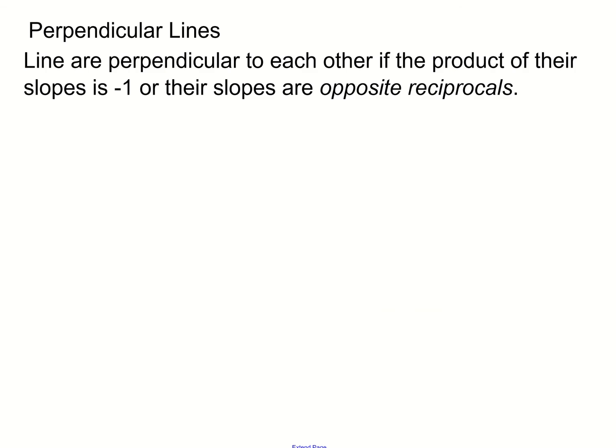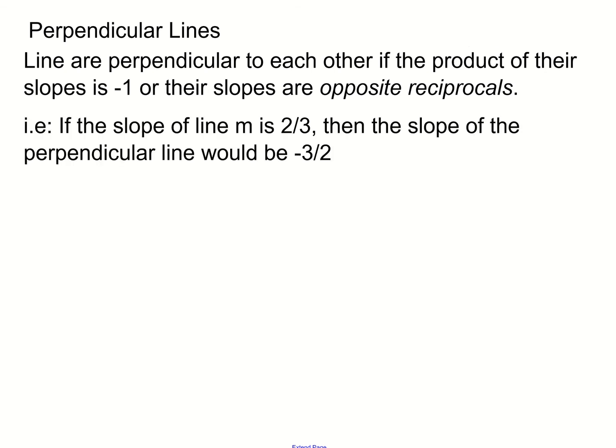Another way to look at perpendicular slopes: their slopes are opposite reciprocals. Opposite means one is positive and one is negative — opposite signs. Reciprocal means you flip the fraction. So you flip the sign and flip the fraction. For example, if the slope of line m is 2 over 3, then the slope of the perpendicular line would be negative 3 over 2 — the sign is flipped and the fraction is flipped.